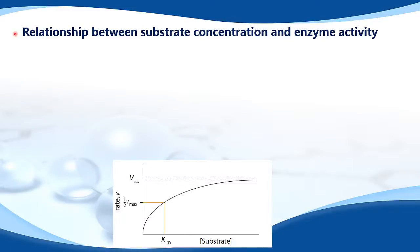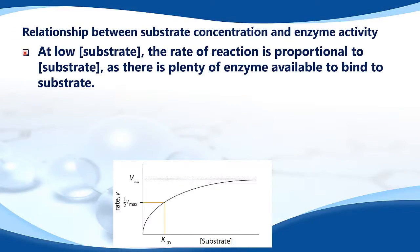Relationship between substrate concentration and enzyme activity. At low concentration of substrate, the rate of reaction is proportional to the concentration of the substrate, as there is plenty of enzyme available to bind to substrate. This can be seen at the start of the graph, where the concentration of the substrate is the lowest and the line is the steepest.